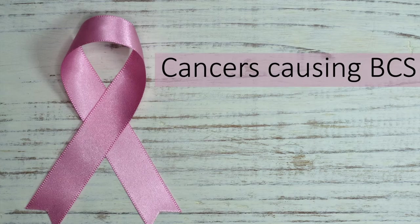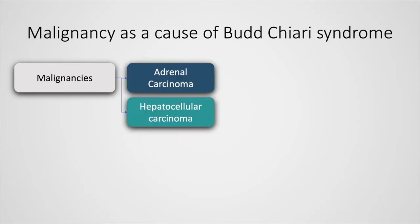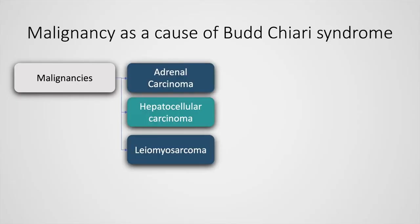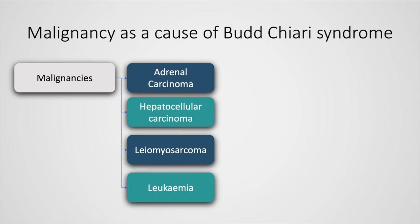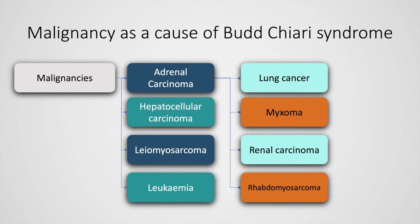Malignancies causing Budd-Chiari syndrome include adrenal carcinoma, hepatocellular carcinoma, leiomyosarcoma, leukemia, lung cancer, myxomas, renal carcinoma, and rhabdomyosarcoma.